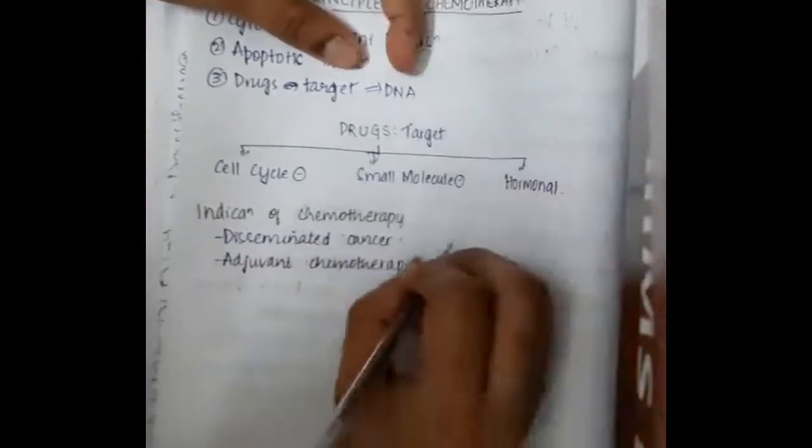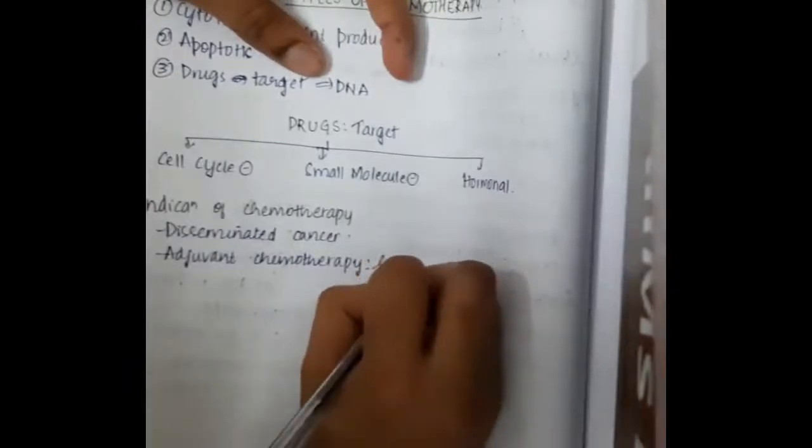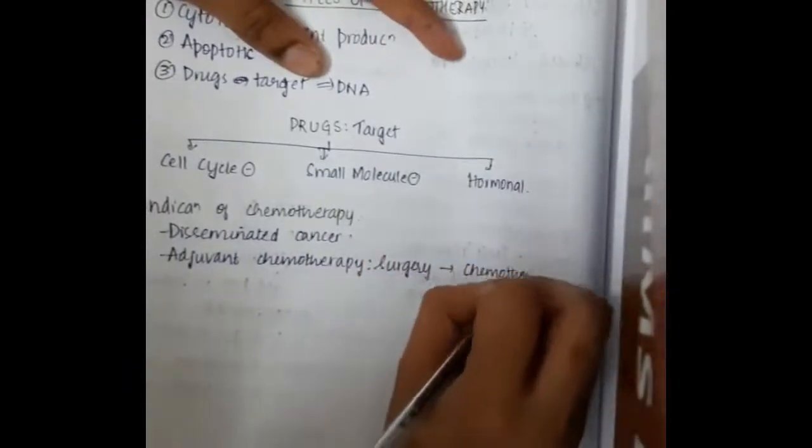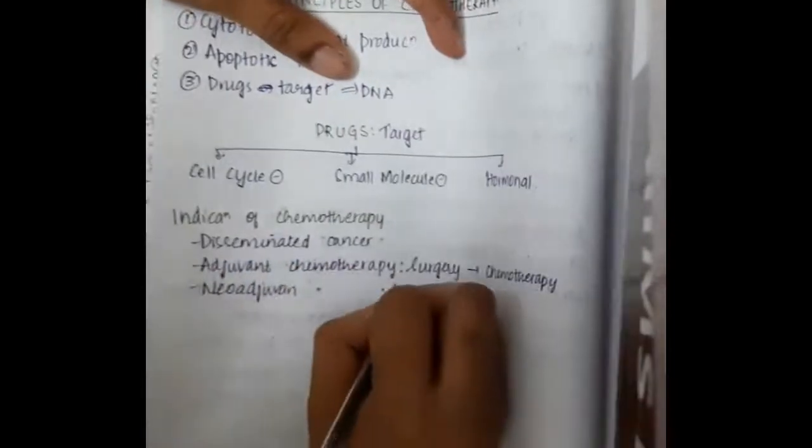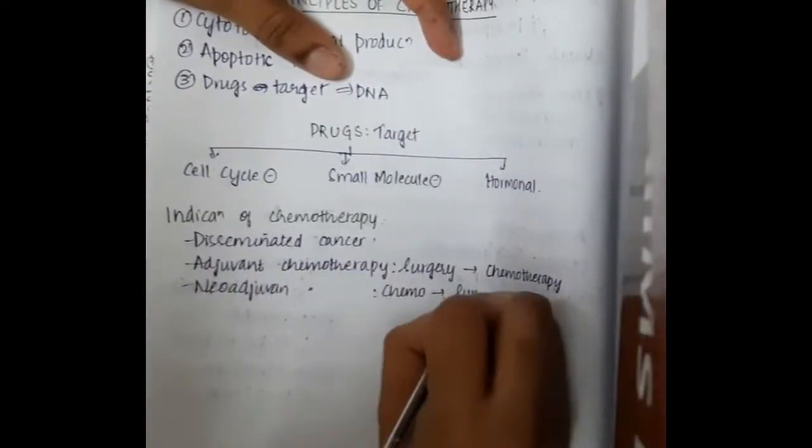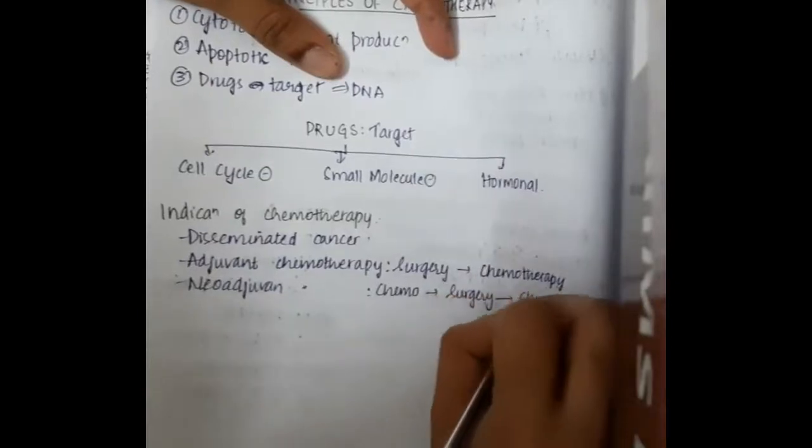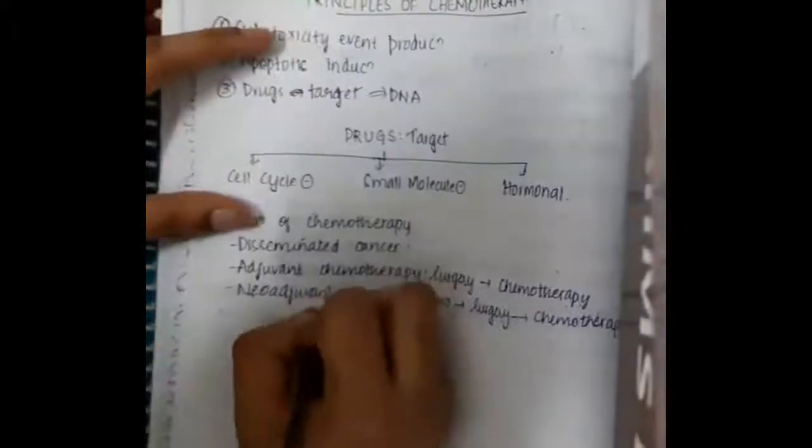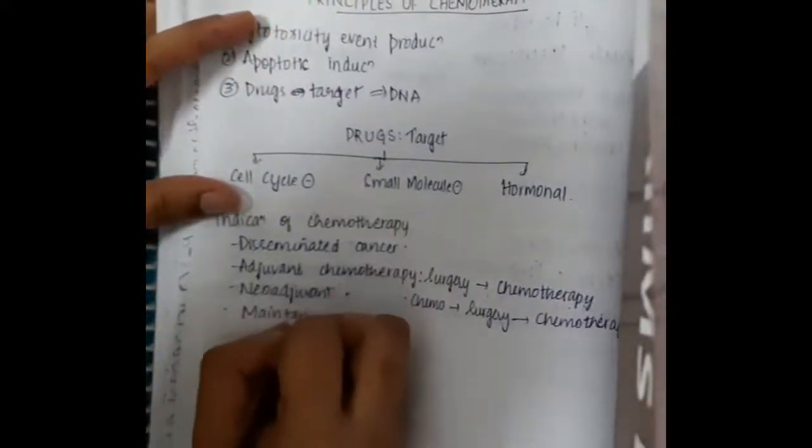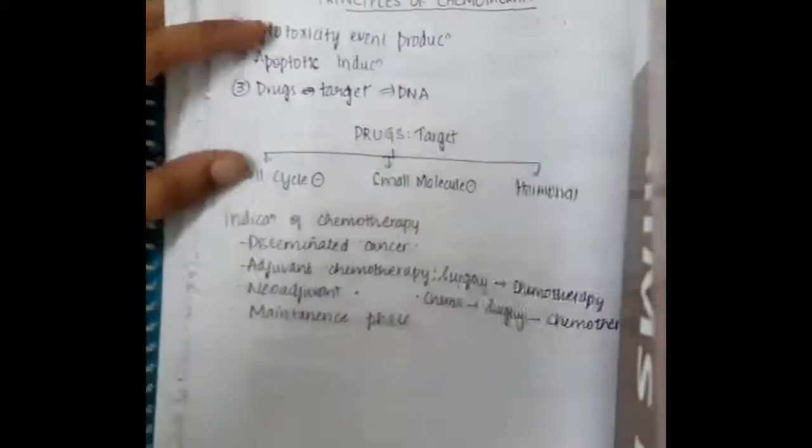Adjuvant chemotherapy is where we treat the tumor with surgery first, followed by chemotherapy. Then we have neoadjuvant chemotherapy where we give chemotherapy first, followed by surgery, and then chemotherapy again. We also have maintenance therapy.